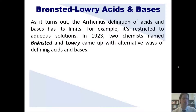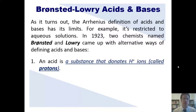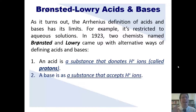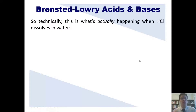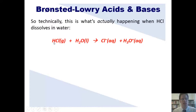The Arrhenius definition of acids and bases has its limits — for example, it's restricted to aqueous solutions. In 1923, two chemists named Brønsted and Lowry came up with alternative definitions. According to their definition, an acid is a substance that donates H+ ions, called protons — that sounds similar to Arrhenius. But a Brønsted-Lowry base is a substance that accepts H+ ions. So what actually occurs when HCl dissolves in water is that the H+ donated by HCl gets attached to a water molecule, producing chloride anion and H3O+, a water molecule protonated by a single hydrogen.